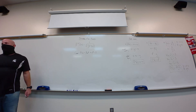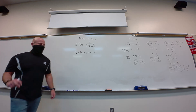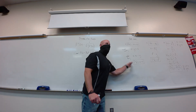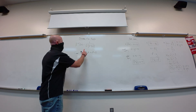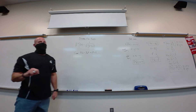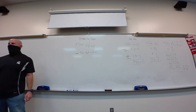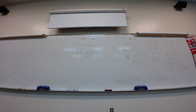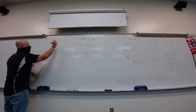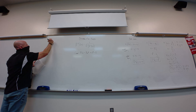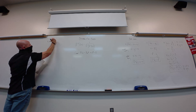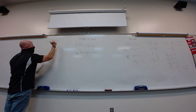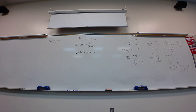Sometimes finding the derivative of an inverse is easy because you can find the inverse and just take the derivative directly. This formula helps when finding the inverse is not easy. So let's find f inverse prime of negative 1 — the derivative of the inverse at negative one.